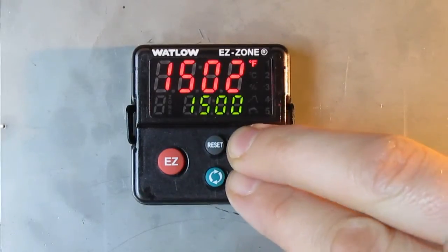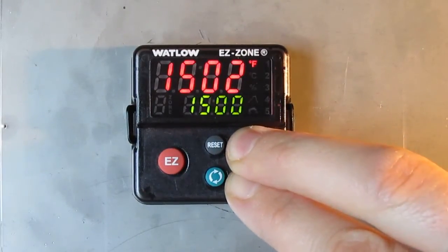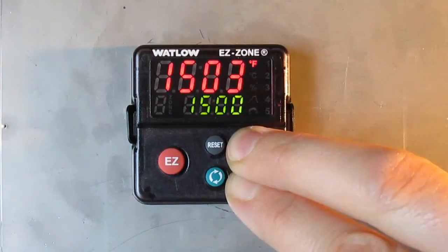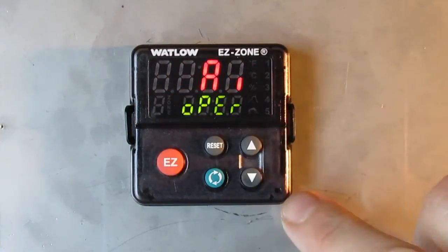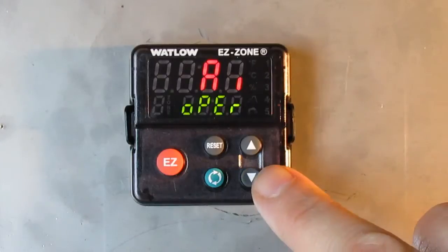Then you go on the controller, press and hold the up and down arrow for 3 seconds until you see operator in the green section.